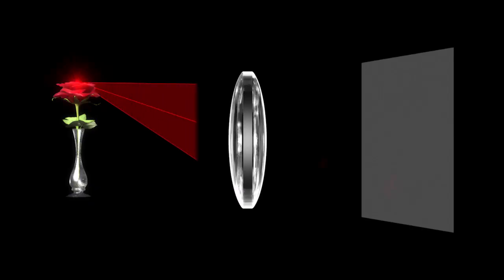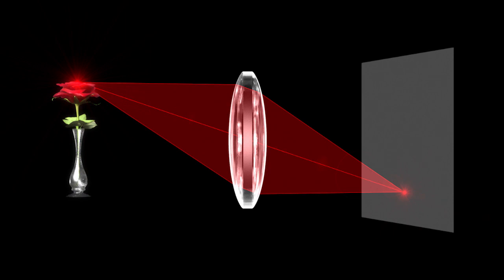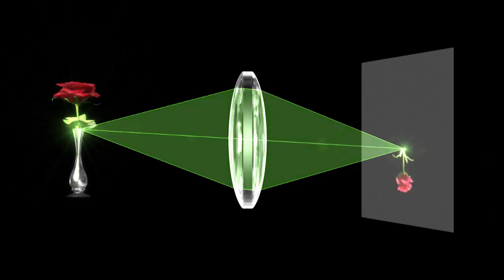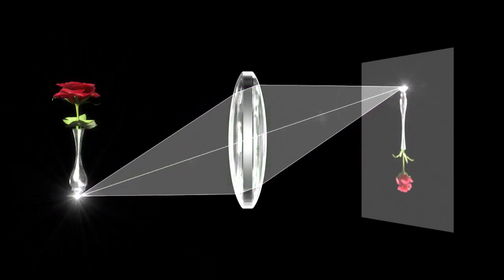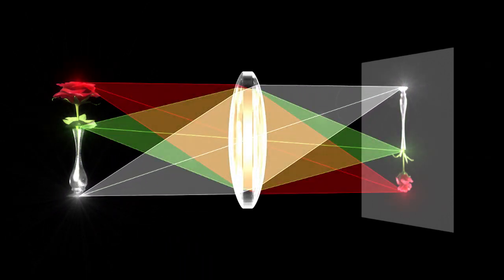When light rays pass through the lens, they refract and converge to a single point to produce an image. Because the image passes through the lens to the opposite side, it is projected upside down.